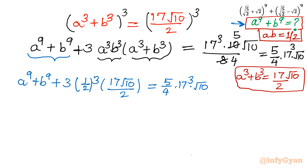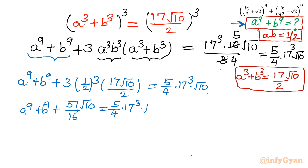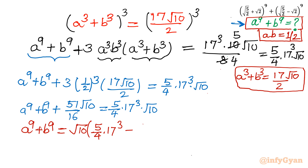Simplifying the third term: 3 × (1/8) × (17√10)/2 = (51√10)/16. Moving this to the right side, a⁹ + b⁹ = √10 × [5 × 17³/4 − 51/16]. Taking √10 as a common factor leaves (5 × 17³)/4 − 51/16 inside the bracket.